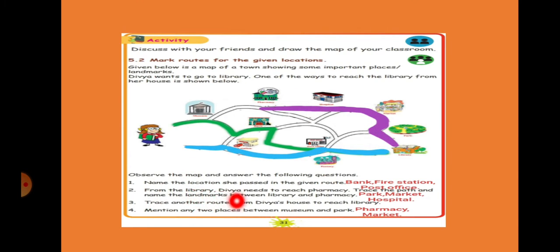Trace another route for Divya's house to library. From Divya's house to library, already they have given one route. Now another route we have to trace. So this is the route she can go, this blue color. Next, mention any two places between museum and park. Museum is here and park is here. We have to mention any two places. So I have mentioned here pharmacy and market. You can tell hospital and market also, otherwise hospital and pharmacy also. That is it, very easy.